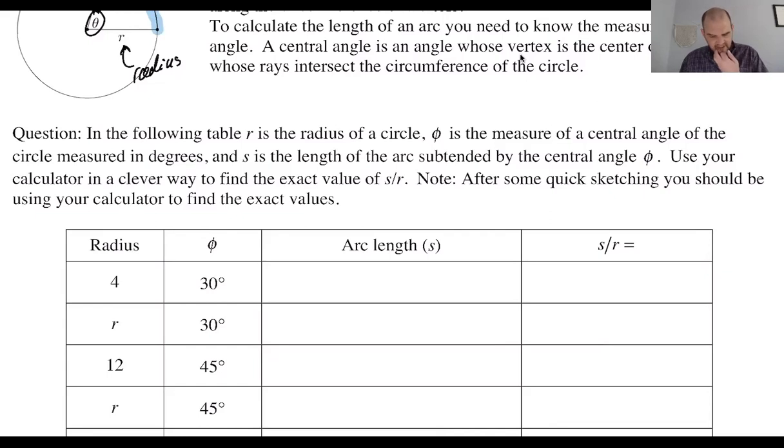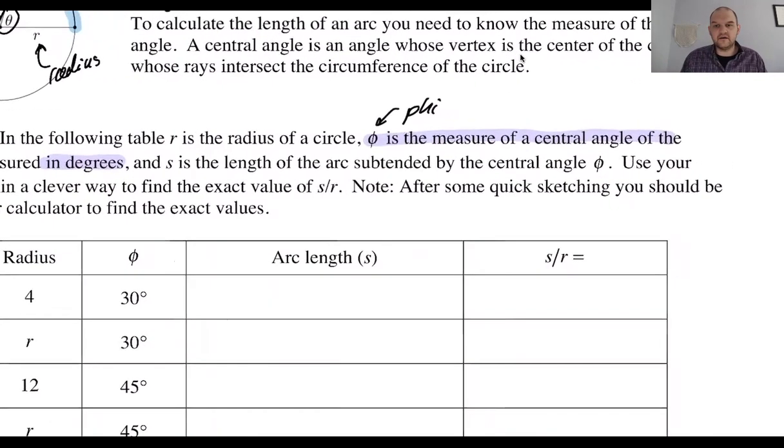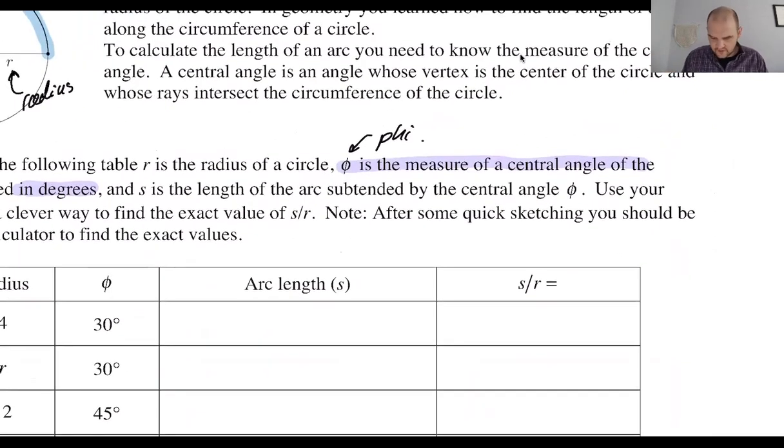So in the following table, r is the radius. Phi, P-H-I, is the measure of the central angle in degrees. So this symbol is P-H-I. I say phi. Some people say phi. That's more of a fraternity type thing.